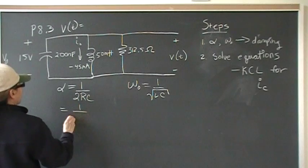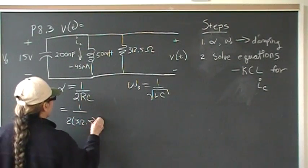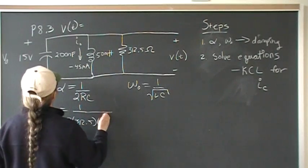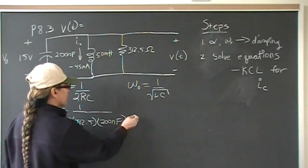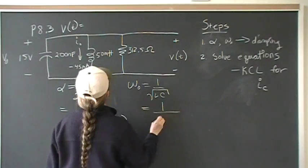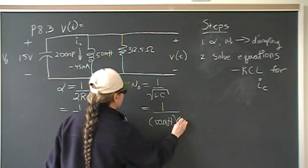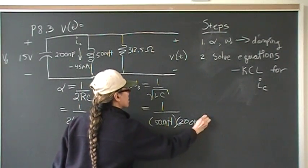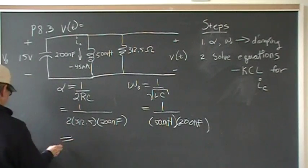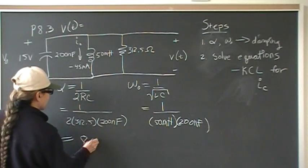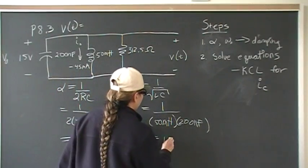So this is going to be 1 over 2 times 312.5 times 200 nanos. If you put that into your calculator, you should come up with a value of 8,000 here. And over here, you should have come up with a value of 10,000.